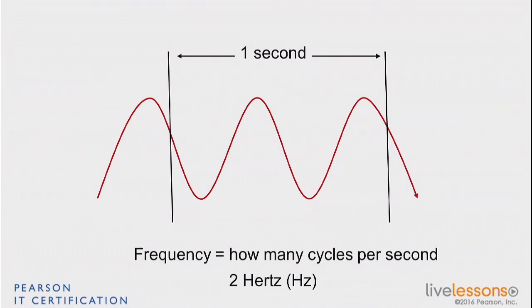Then, of course, there is kilohertz, thousands of cycles per second. Megahertz, millions of cycles per second. Gigahertz, billions of cycles per second. In WiFi, we'll be working most of the time at the gigahertz scale.